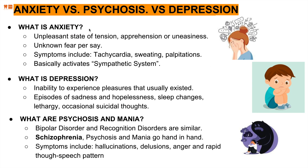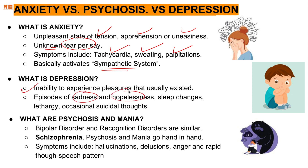From a general perspective: anxiety is tension, apprehension, uneasiness, and fear of the unknown; it activates the sympathetic nervous system causing tachycardia, sweating, and palpitations. Depression is the inability to experience pleasures that usually existed, involving sadness and hopelessness, all the way down to suicidal feelings. We have dedicated lectures on these topics as well.